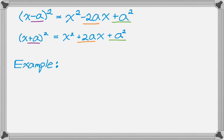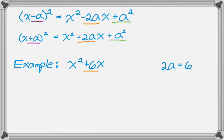So if we have x squared plus 6x, we want to complete the square and end up with something that looks like a quantity squared. The plus 6x corresponds to 2a, so 2a equals 6, which means a must equal 3. So I'm going to square 3 and add it — but I can't just do that on its own.